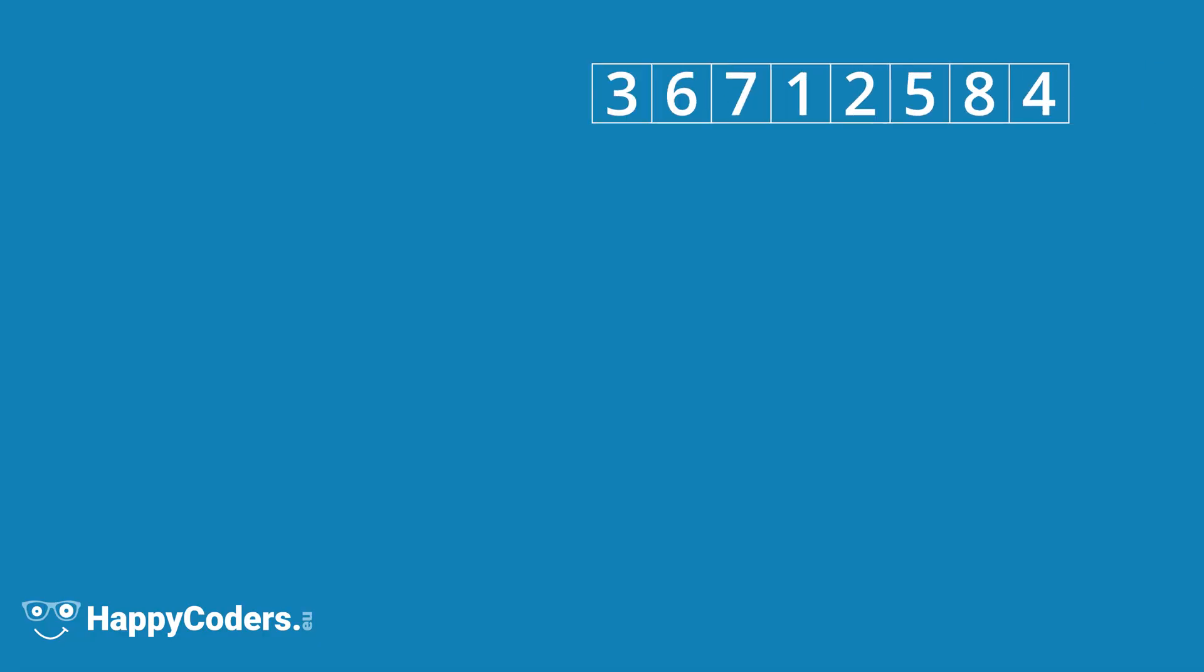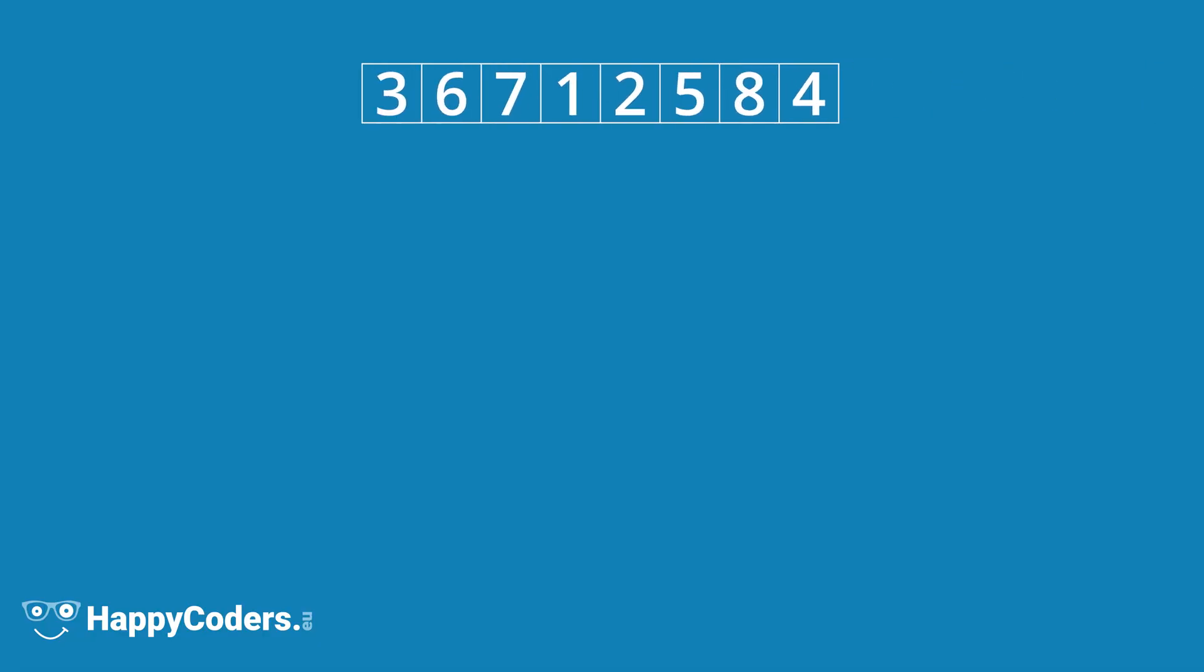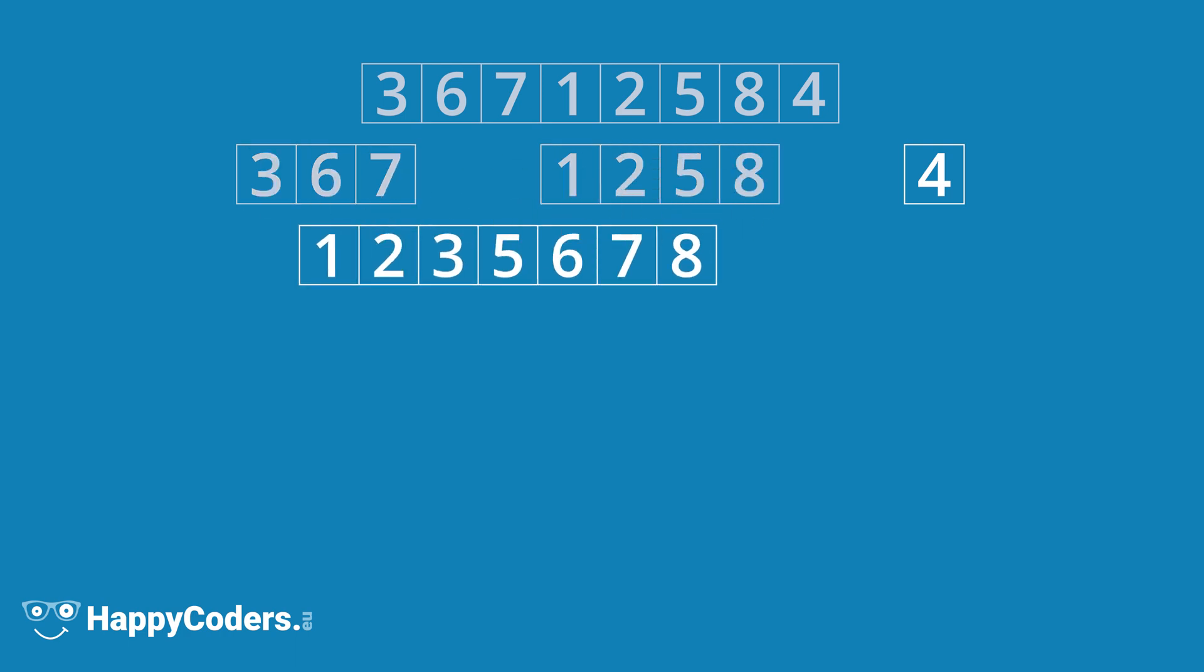Now I would like to introduce you to an optimization of merge sort called natural merge sort. If we look at the first example once again, we can see that our sequence of numbers contains some sub-sequences that already contain the numbers in their proper order. These sub-sequences can be determined by a single run over all numbers. We can then proceed directly to the merge phase. We merge the first two sublists, and when we merge the result with the third sublist, all numbers are sorted.